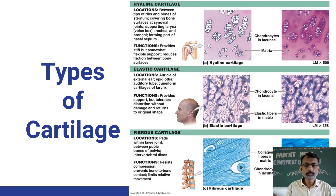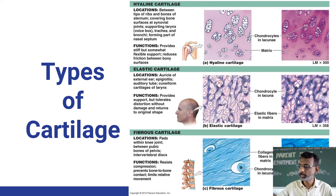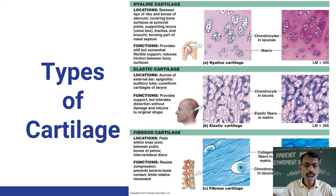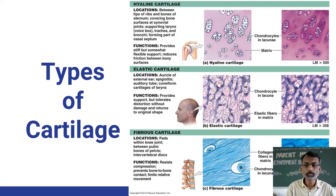There are three different types of cartilage present in the human body: the first is hyaline cartilage, the second is elastic cartilage, and the third is fibrous cartilage. The first — hyaline cartilage — is present between the tip of the ribs and the bones of the sternum.